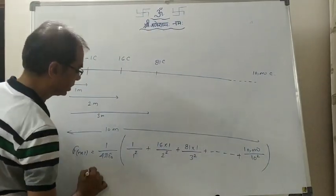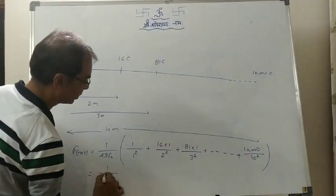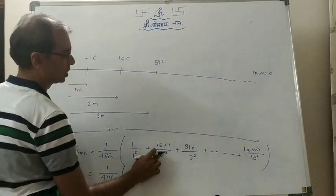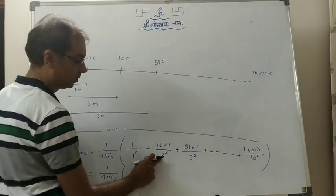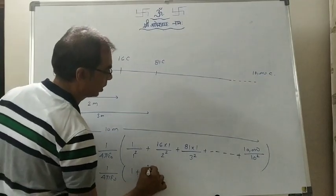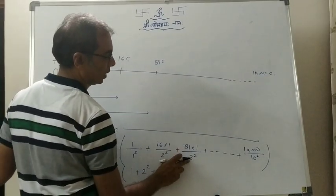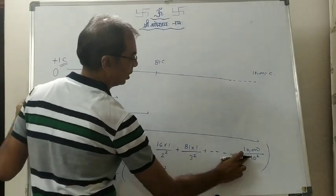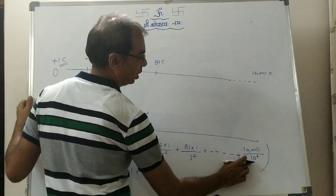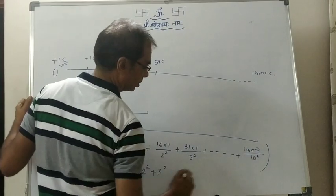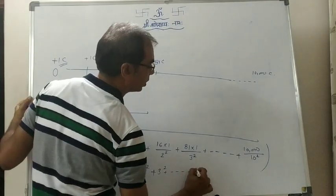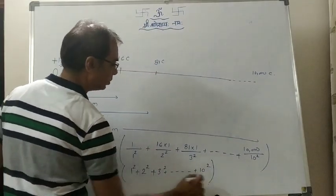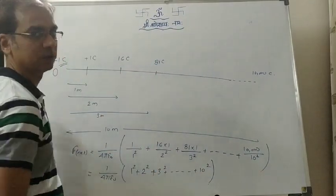So here one series is being formed. This is 1 by 4πε₀. The terms are: 1, then 16 by 4 which is 4, which I will write as 2 square, plus 81 by 9 which is 9, so that means 3 square, and here in the end 10,000 by 100, so 100, which we can write as 10 square. And this first term is 1 square. So this is a series of sum of squares.